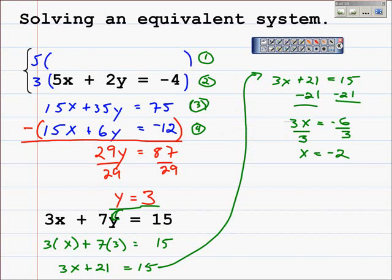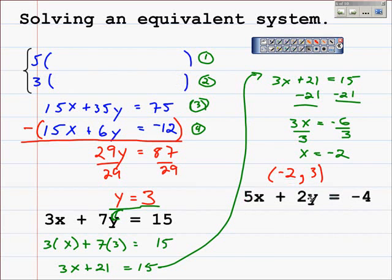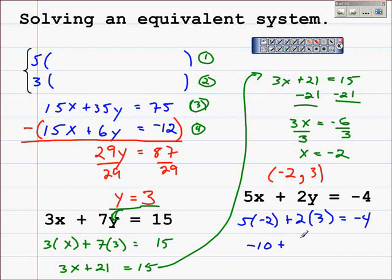As we have seen, this will be our solution, the ordered pair negative 2 comma 3, and we could and usually should check our work. So we'll take the other original equation and plug the values for x and y in, giving me 5 times negative 2 plus 2 times 3 equals negative 4. 5 times 2 is negative 10, 2 times 3 is 6, and negative 4 equals negative 4. So thus, this is our solution.